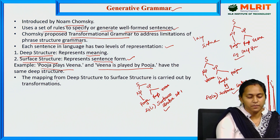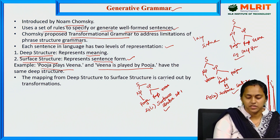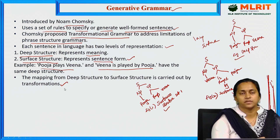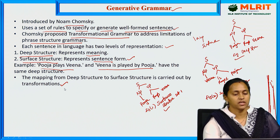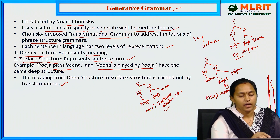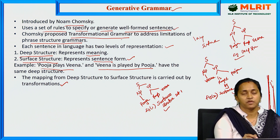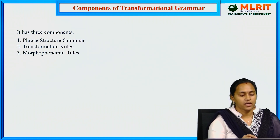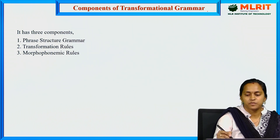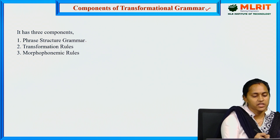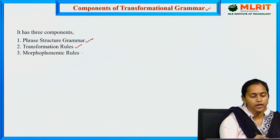This is generative grammar according to Chomsky — transformation grammar. There are three types: phrase structure grammar, transformation rules, and morphophonemic rules.